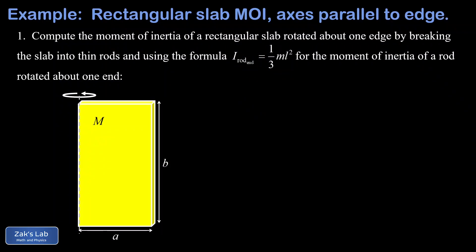In this video, we're computing the moment of inertia of a rectangular slab about two different axes. The first one is when the rotation axis is co-linear with one edge of the slab, as shown in the picture below. The second problem we're going to solve is an axis parallel to one edge of the slab, but passing through the center of mass.